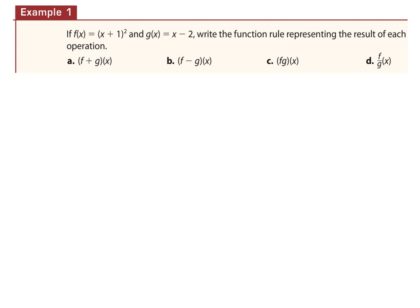Let's look at the first example. They've given us f(x) = (x + 1) squared and g(x) = x − 2. They don't want us to plug in a number — they want a new function representing the rule. To add them: f + g means (x + 1) squared plus (x − 2). To simplify, I need to handle the exponent first.